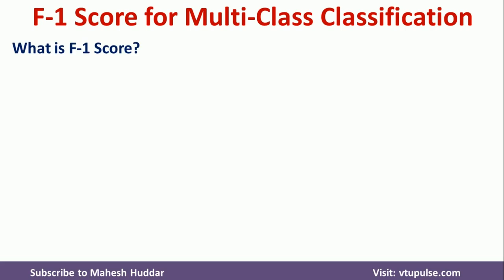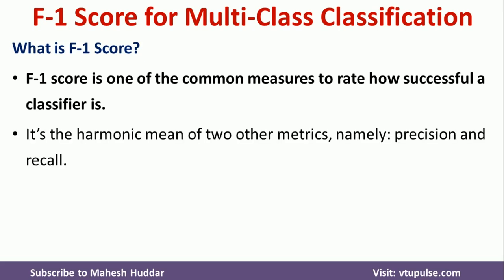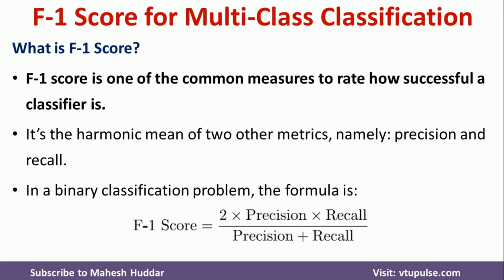We will see what is F1 score and what is the formula to calculate it. F1 score is one of the common measures to rate how successful a classifier is. It is the harmonic mean of two other metrics, namely precision and recall. To calculate the F1 score, we use the formula: 2 times precision multiplied by recall, divided by precision plus recall. Using this formula, we can calculate the F1 score for binary classification, or for multi-class classification we calculate this F1 score for every individual class separately.